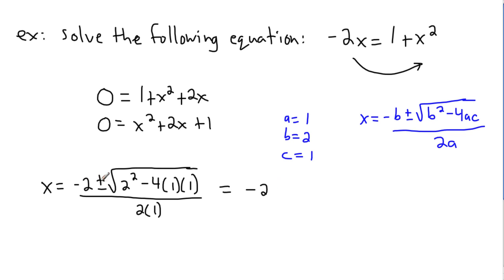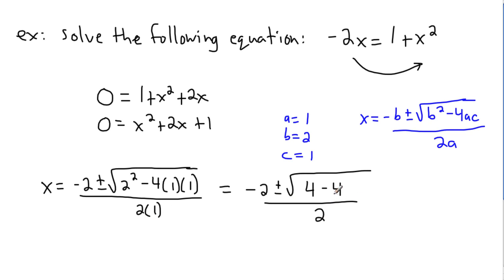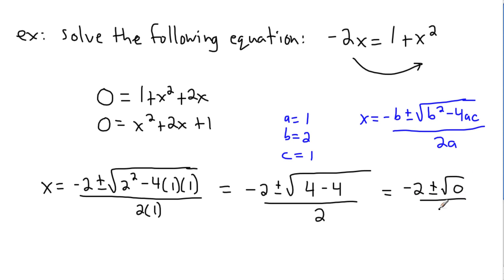Now I can simplify a bit. I still have minus 2 plus or minus, and inside the square root: 2² is 4, and 4 times 1 times 1 is also 4, so it's 4 minus 4. Divide that by 2 times 1, which is just 2. Now 4 minus 4 is 0, so the square root of 0 is just 0. This gives us minus 2 plus or minus the square root of 0, divided by 2.